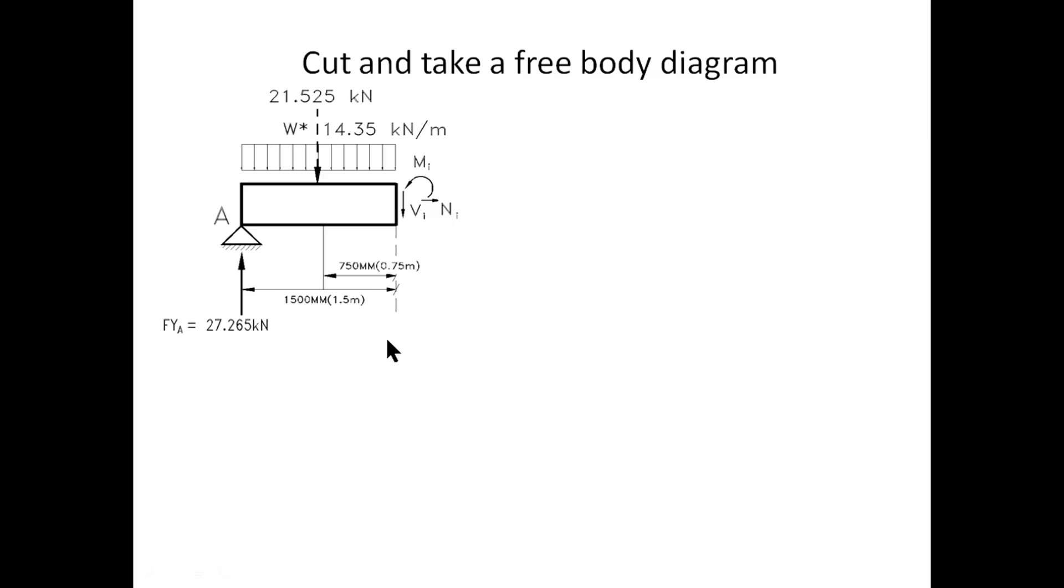So here basically we have three unknowns which is MI, NI and VI. And of course we have three equations of equilibrium so the problem is statically determined. Take some of now now it's time to work out the internal forces so we can take the sum of moment around the cut is equal to zero and that will be minus 27.265 multiplied by the lever arm of 1.5. Why is that minus? Because we are going clockwise and we've assumed that as a minus sign convention.